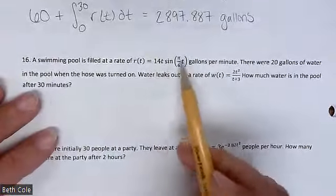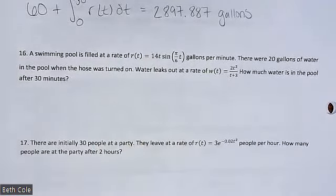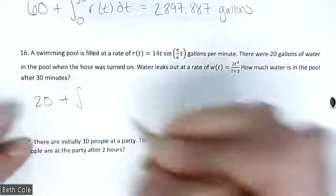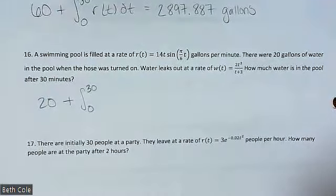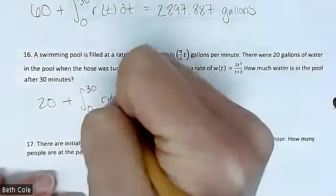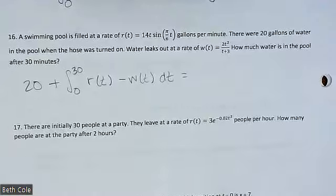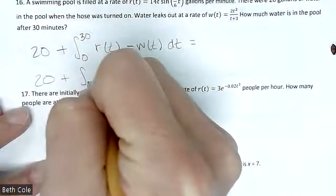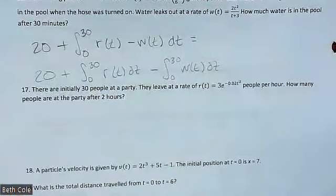A swimming pool is filled at a rate of this many gallons per minute, there were 20 gallons in the pool when the hose got turned on, but water is also leaking out — rate in, rate out. How much water is there after 30 minutes? It's 20 plus the integral from 0 to 30 of r(t) minus w(t) dt. That's rate in minus rate out — remember the party: people arriving minus people leaving. Alternatively, you could write it as 20 plus integral of r(t) dt minus integral of w(t) dt — same thing.